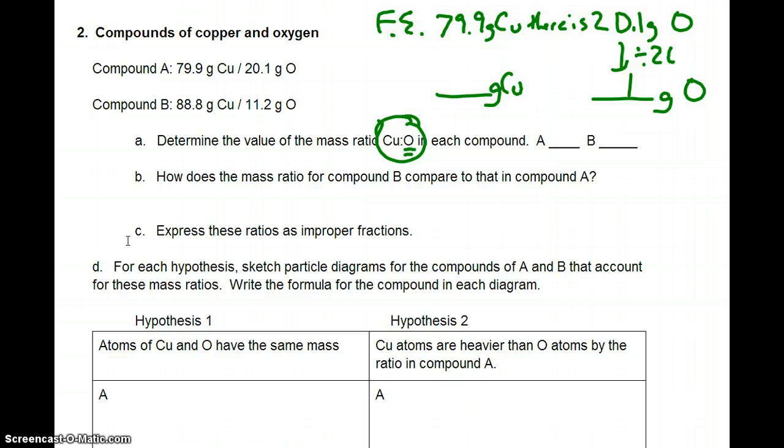In order to get from 20.1 to 1, I had to divide by 20.1. Here I'm going to divide by 20.1. And that's going to come out to be a number real close to 4, like 3.99. So determine the value of the mass ratio. It's 3.99. And then this one is going to be pretty close to an 8 ratio. So let's just say 4 and 8. How does the mass ratio for compound B compare to that in compound A? Well, again, it's twice.